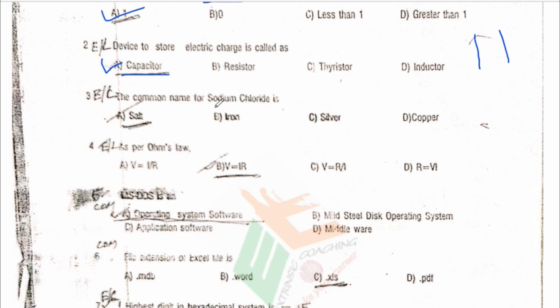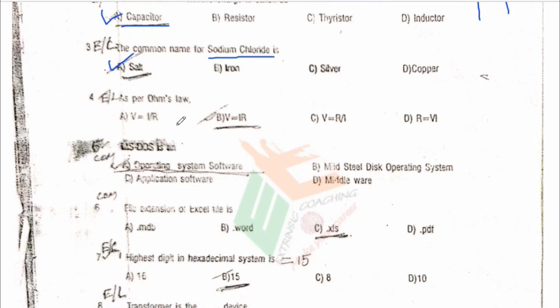Next: the common name of sodium chloride. The options given are salt, iron, silver, and copper. Sodium chloride's common name is salt, which is the correct answer.